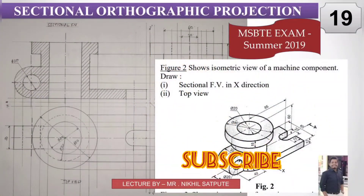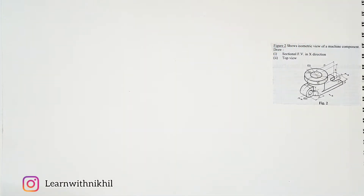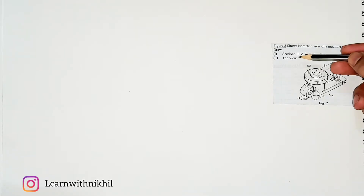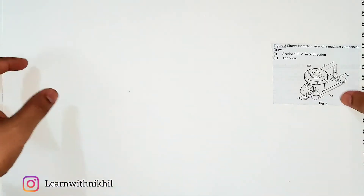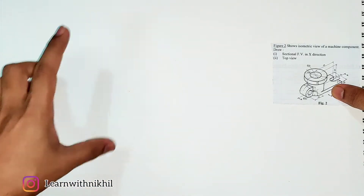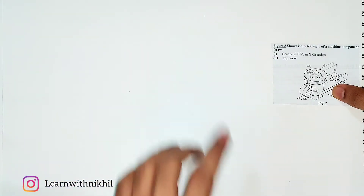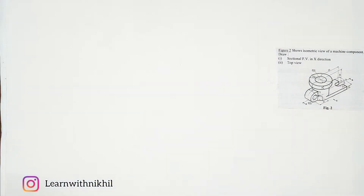Hello and welcome back to my channel Learn with Nikil. Here we have taken another sum on sectional orthographic projection. We have been given the three-dimensional view and we have to draw its sectional front view in the direction X and the top view. According to direction X, here will be the front view, here will be the top view, and here will be the side view.